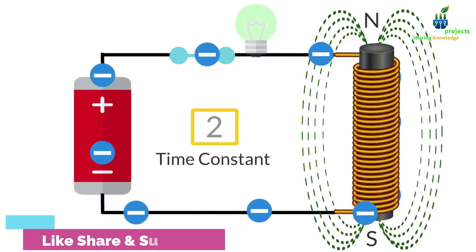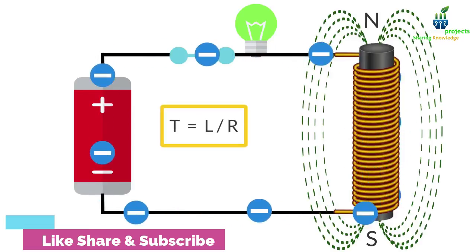The current will continue to flow and reach its maximum value after 5 time constants or 5T, where T is equal to L divided by R. The light bulb will then be at its maximum brightness.